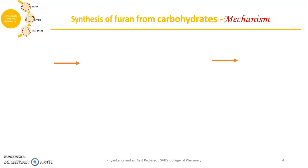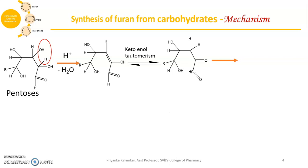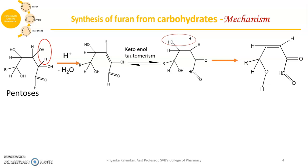Now we will see the mechanism one by one. Once we have pentose, there is loss of a water molecule — that is, dehydration — resulting in the formation of a new double bond between C2 and C3. This is in the presence of acidic conditions, so this is acid-catalyzed dehydration. Then, through keto-enol tautomerism, it exists in the keto form. This keto form then again undergoes dehydration with loss of a water molecule, resulting in formation of a new double bond between C3 and C4.